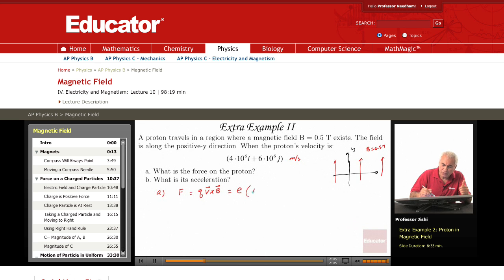V is 4 times 10 to the 6 I hat plus 6 times 10 to the 6 J hat. This is V.